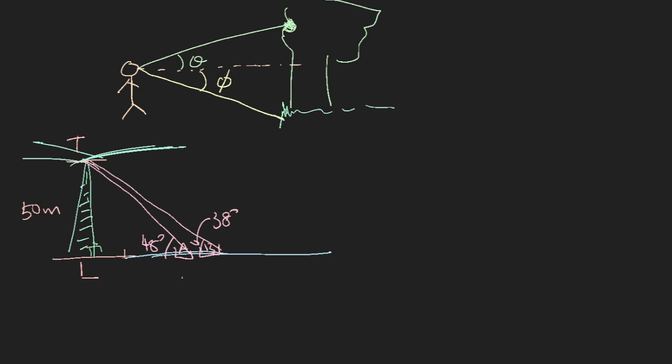Question: you have a lighthouse and the lighthouse is 50 meters tall. You have two boats. You don't know the distance the lighthouse is from the boats. All you have is the angle of elevation of the top of the lighthouse to the boats. So this boat is 48 degrees and this is 38 degrees. Now find the distance between the two boats.